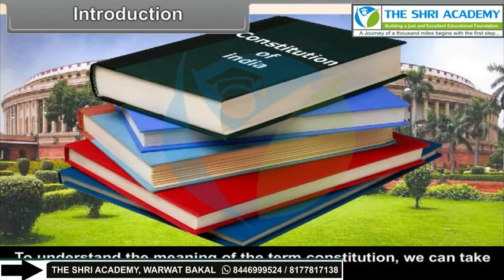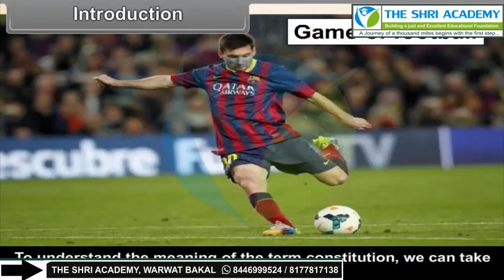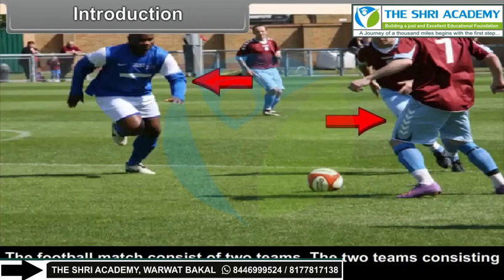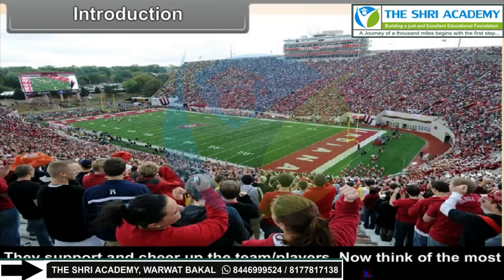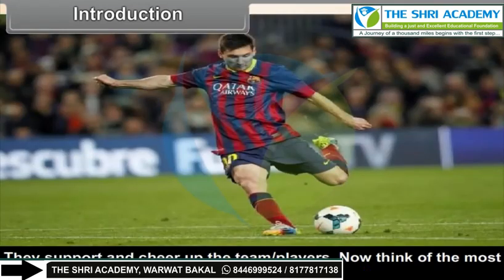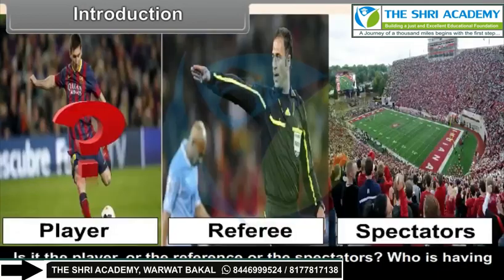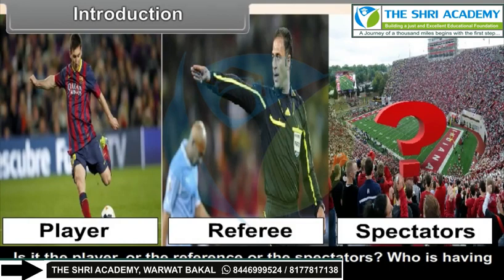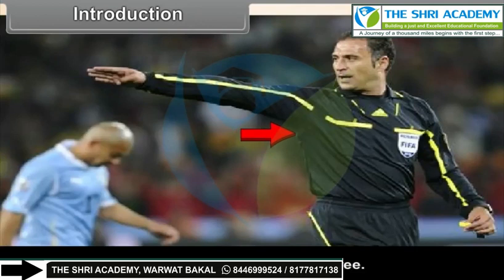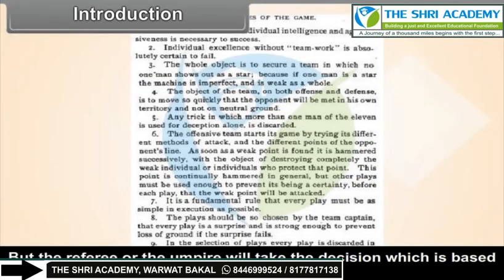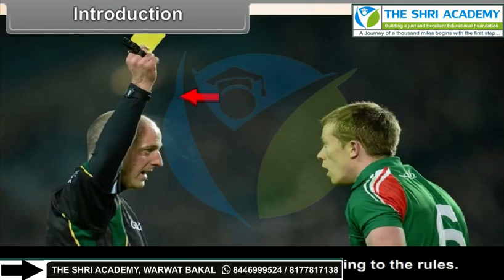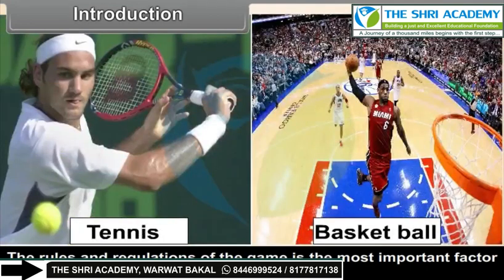Introduction. To understand the meaning of the term Constitution, we can take the example of the game of football. A football match consists of two teams of players, referees, and spectators who support and cheer the teams. The most important factor is not the player or the referee — it is the rules. The referee takes decisions based on the rules of the game and cannot decide without referring to them.